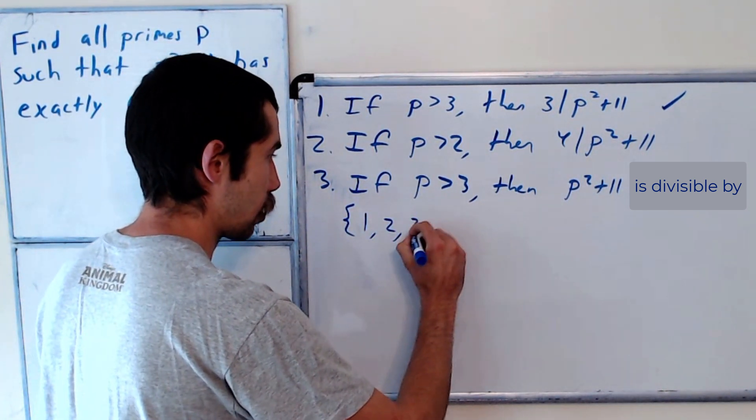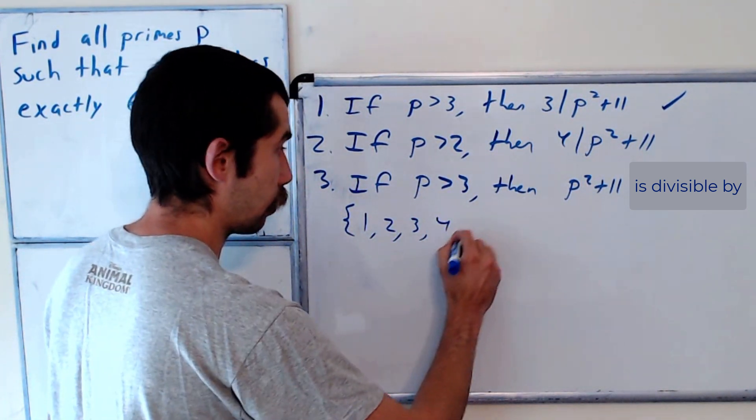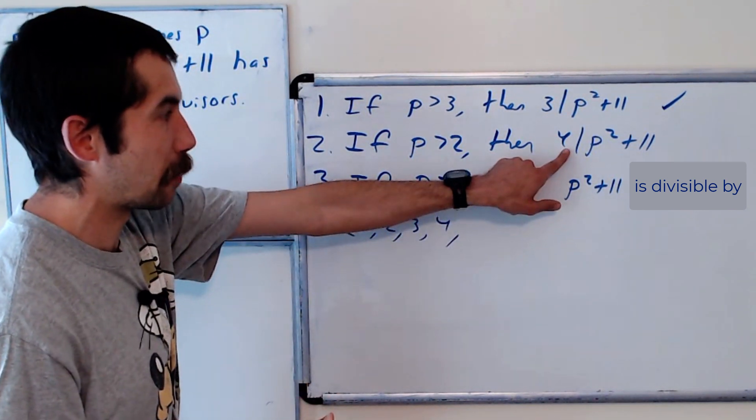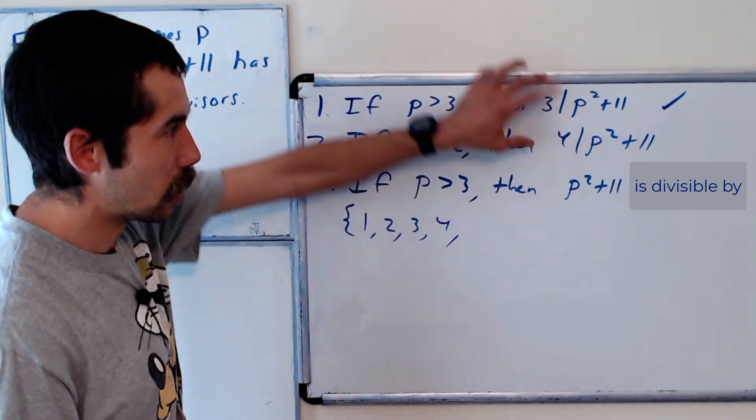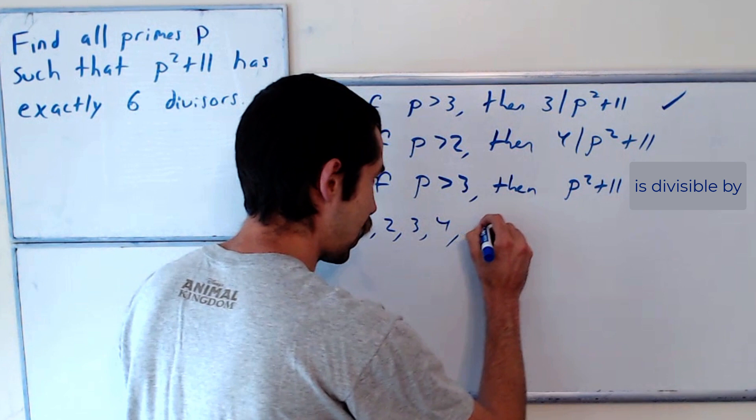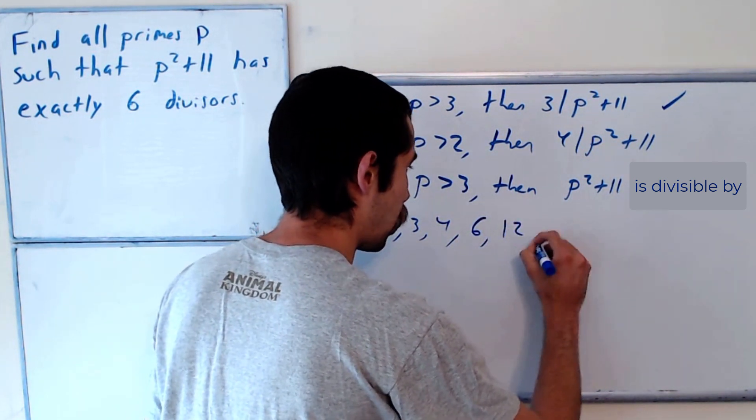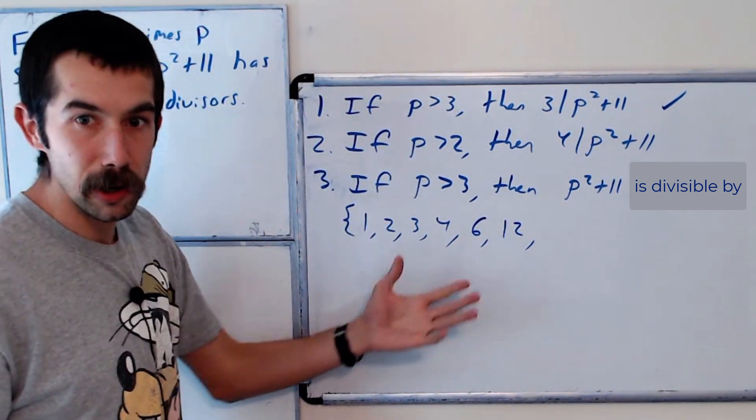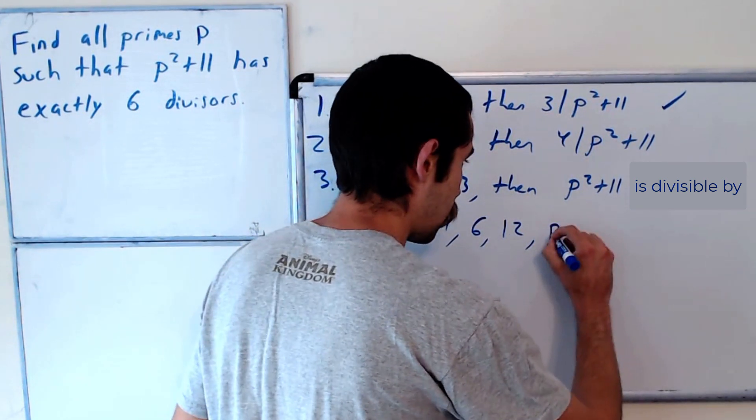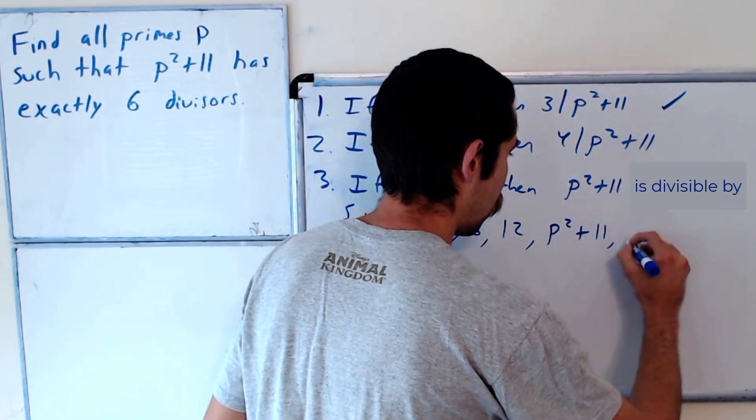1, 2, 3, 4, right? Anything that's divisible by 4 is also divisible by 2. Combining these two, we have 6. Combining them, we have 12. And then it's also divisible by p squared plus 11. And there might be more.